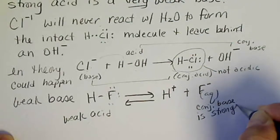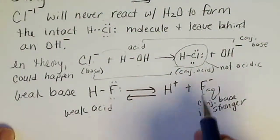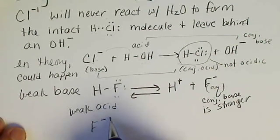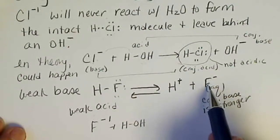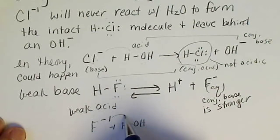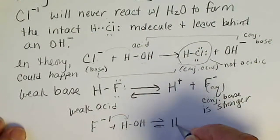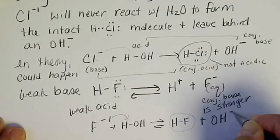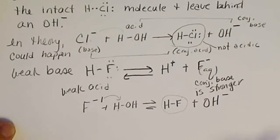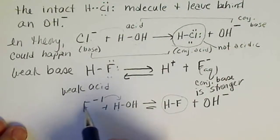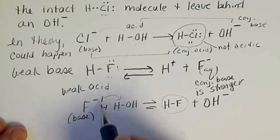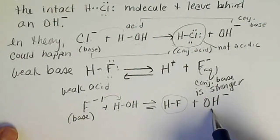This conjugate base is stronger than the conjugate base of a strong acid. If fluoride is in the presence of water — whether in a salt or in the HF equilibrium — this fluoride could pull a proton off of water, making the intact hydrogen fluoride molecule and leaving behind a hydroxide ion. So the conjugate base of a weak acid would make a solution basic.